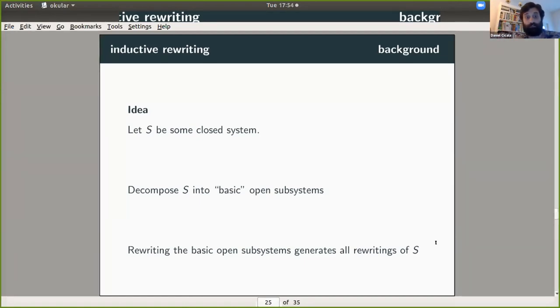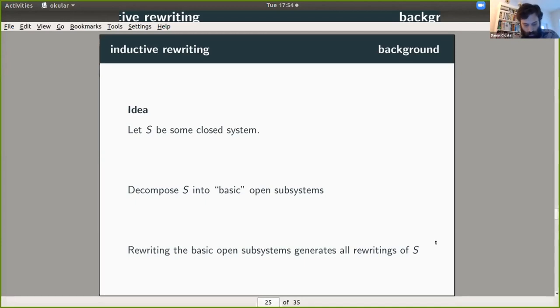So let S be some closed system. And then we're going to decompose this into some basic open subsystems. And then we can characterize all possible rewritings of S. This, of course, is relative to some set grammar, but we can characterize all possible rewritings simply by understanding the rewritings of the basic open subsystems. So it's kind of like a structural induction thing as opposed to looking at the rewrite relation.